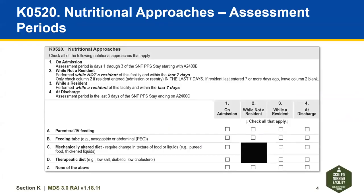Here's a screenshot of the item. As you would have noted in the didactic presentation, the original columns — while not a resident and while a resident — have been moved and they now are Column 2 and 3. The two new columns on this revised data element are Column 1, On Admission, and Column 4, At Discharge.